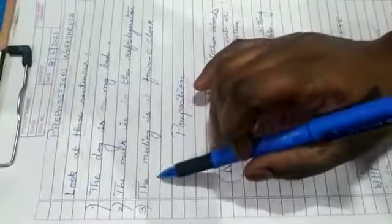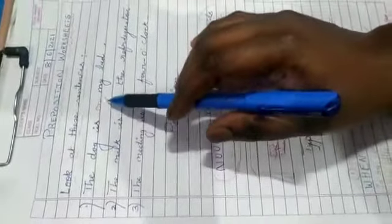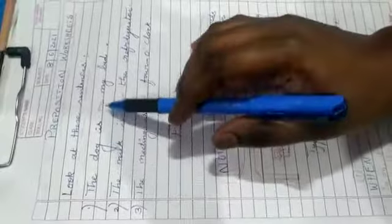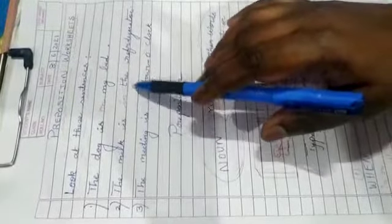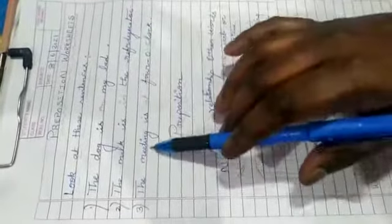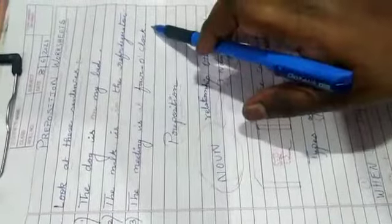Let's read some sentences from here. I've written three sentences: the dog is on the bed, the dog is on my bed. Then the milk is in the refrigerator. The meeting is at 4 o'clock. So look at all these sentences.